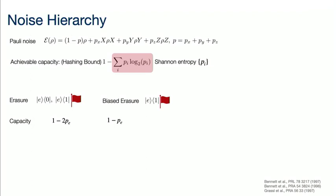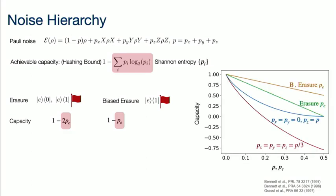For the standard erasure channel, the capacity is 1 minus 2*PE, where PE is the probability of an erasure, and for the biased erasure it's 1 minus PE. These quantities 2*PE and PE are also related to the entropy. Let's look at the capacity plotted for some different channels. The red line is for a depolarizing Pauli channel where the probability of X, Y, and Z errors are the same. The blue line is for a biased noise channel with only Z errors, and the green and orange lines are for erasures and biased erasures.